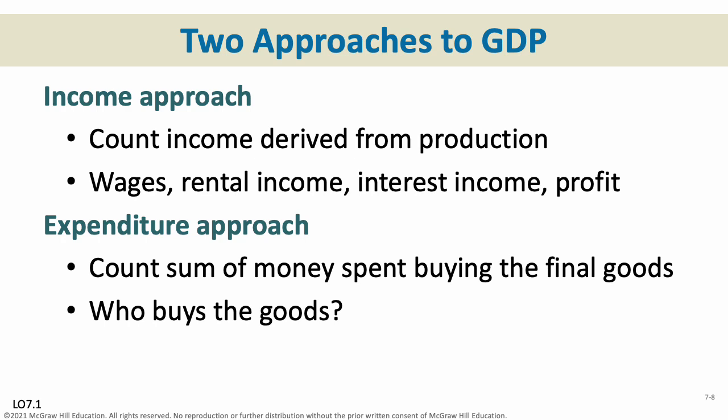We can calculate GDP in two ways — think of it as two sides of the same coin, or two routes that bring you to the same destination. By rule, regardless of whether we use the income or expenditure approach, it will give you the same answer. The income approach counts income from each step of production — wages, rental income, interest income, and profits. The expenditure approach is simply counting the sum of money spent buying final goods, broken down by who buys them. Regardless of what approach we use, we're going to wind up with the same answer.